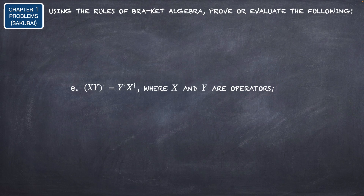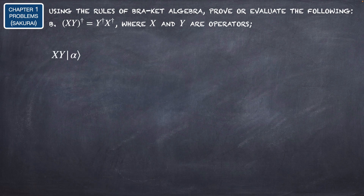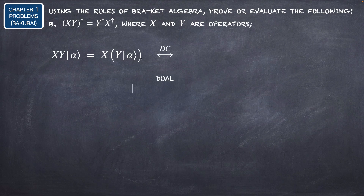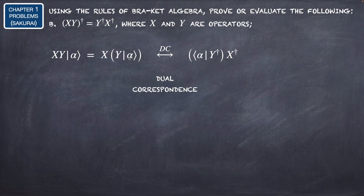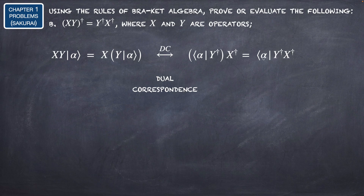For letter B, we need to show (XY)† = Y†X†. We consider XY acting on |α⟩ as the product of the two operators X and Y acting on the ket, which we also understand as X acting on the resulting ket of Y acting on |α⟩. The dual correspondence of the ket Y|α⟩ is the bra ⟨α|Y†, and this operator in bra space will be X†.